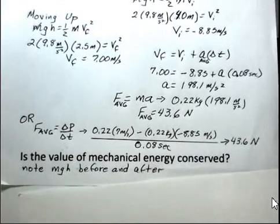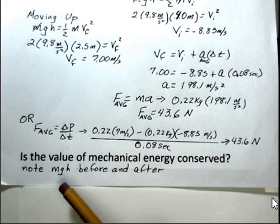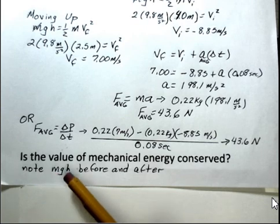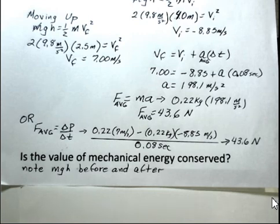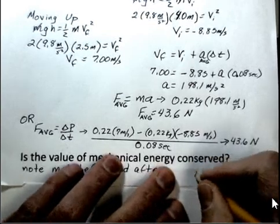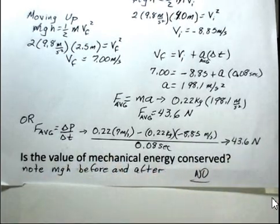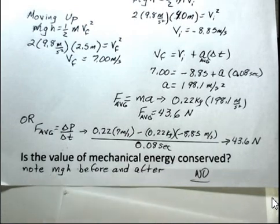And then a question, is the value of the mechanical energy conserved from before the collision to after the collision? Well, you would take note that the mass is unchanged, g is a constant, but the H numbers are different. We started at 4 meters, we only go back up to 2.5 meters. So at these two heights, the kinetic energy is 0. It's all potential energy, and they're not equal. So no, there is a loss of energy in this inelastic collision with the floor.